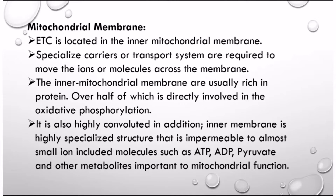Specialized carriers and transport systems are required to move ions and molecules across the membrane. The inner mitochondrial membrane is rich in protein — over half of which is directly involved in oxidative phosphorylation. It is also highly convoluted. The inner membrane is a specialized structure that is impermeable to almost all small ions including protons, and small molecules such as ATP, ADP, pyruvate, and other metabolites important to mitochondrial function.